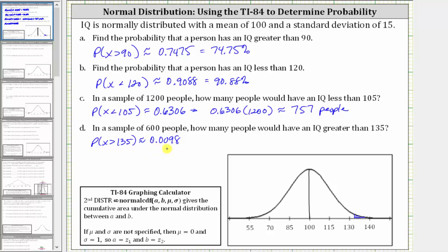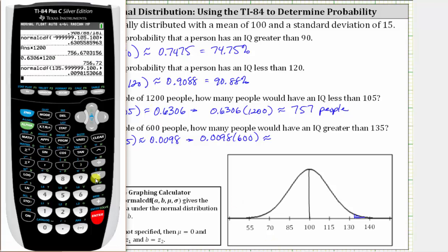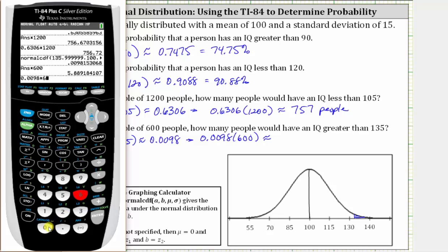As a percentage that would be 0.98%. To find the number of people out of 600 with an IQ greater than 135, we use the decimal and multiply by 600. We can press times 600, or use the decimal approximation 0.0098 multiplied by 600. Rounded to the nearest person, this gives us approximately six people.